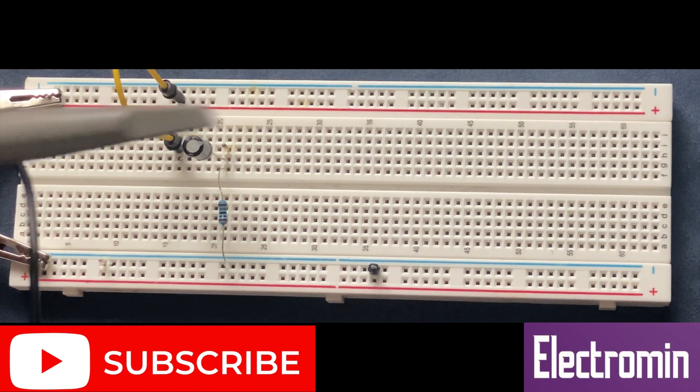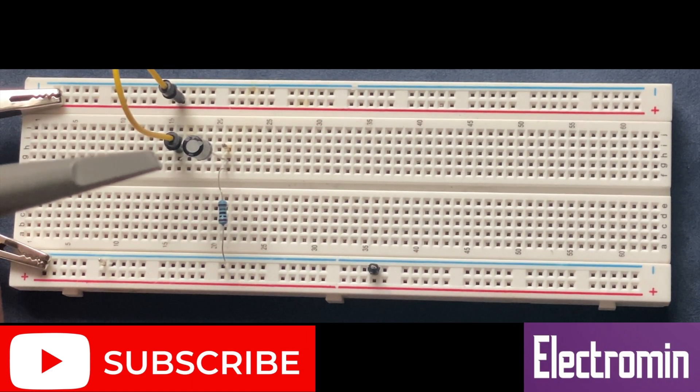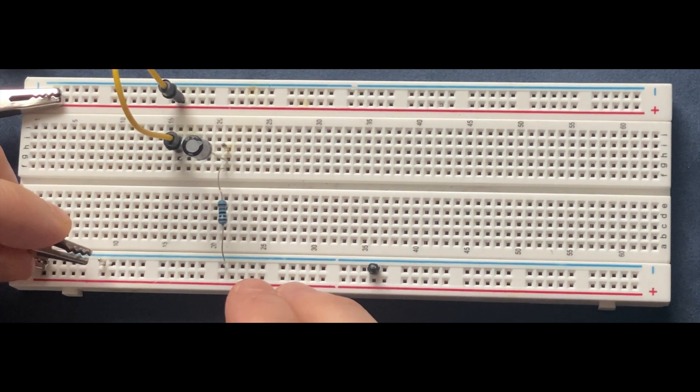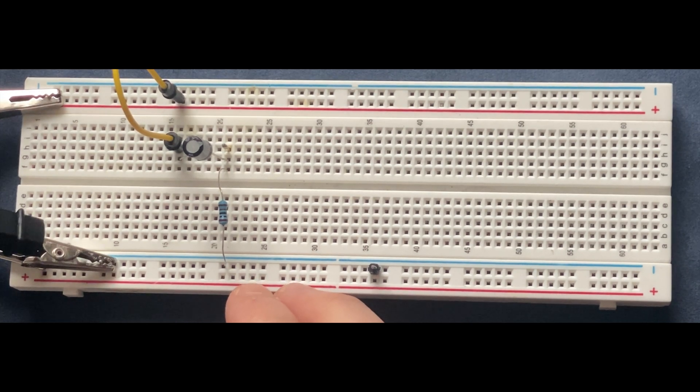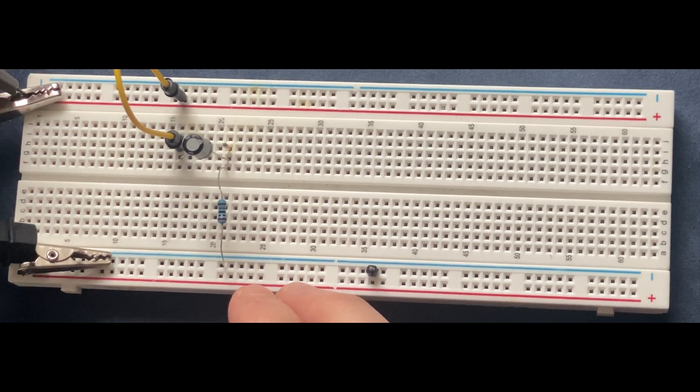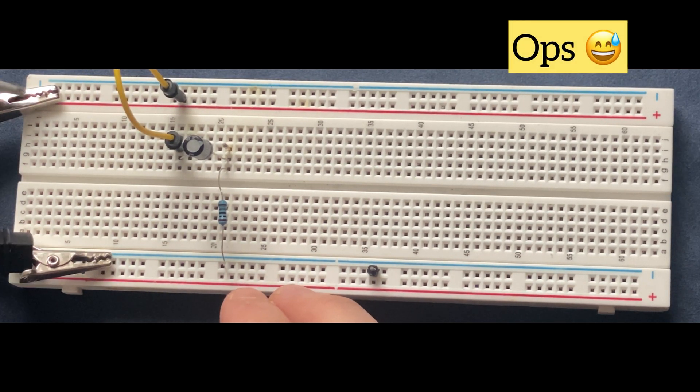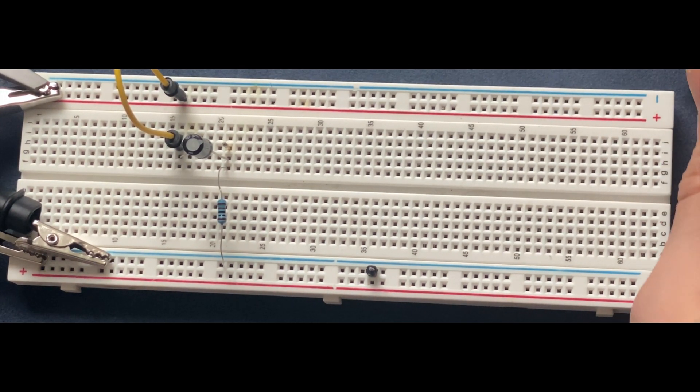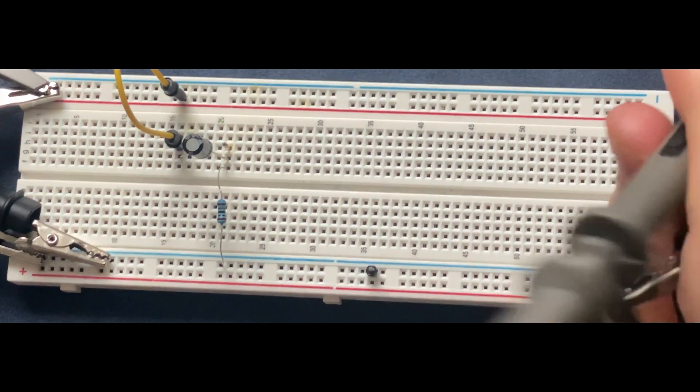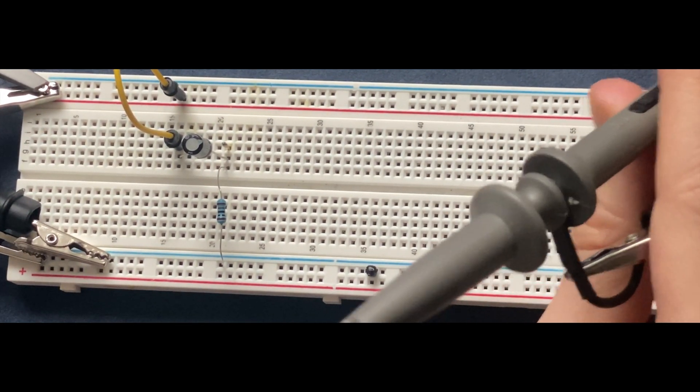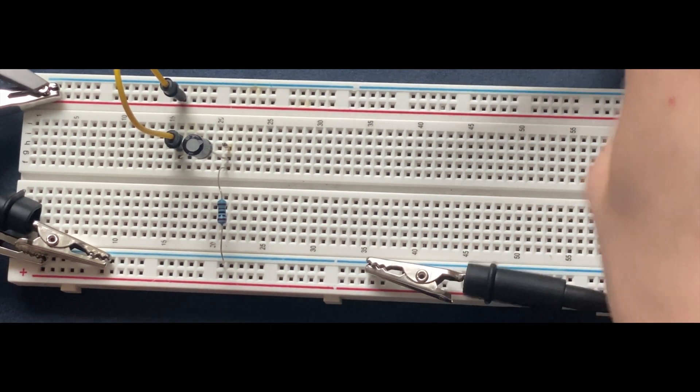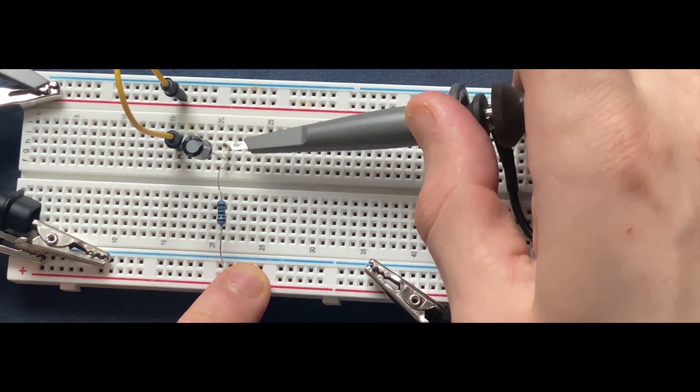Here are my oscilloscope probes. This one is going to be channel one for the input signal, so this one goes to ground and this one to the positive rail of the breadboard. Then I'm going to connect my second probe, which is channel two for the output signal. This one goes to ground and this one to the node between capacitor and resistor.